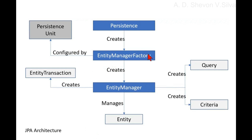An entity is a persistent domain object. Each entity represents a table in a relational database, and an entity instance corresponds to a row in that table. JPA uses annotations or XML to map entities in a relational database. The persistent states of an entity — fields or properties with setter and getter methods — use object-relational mapping annotations to map the entities and entity relationships to the relational data in the underlying data store.